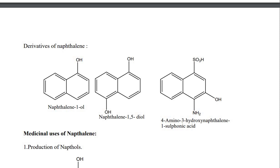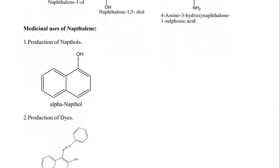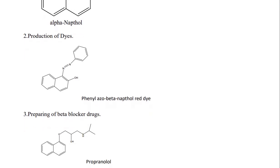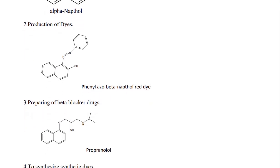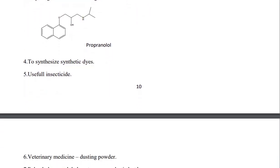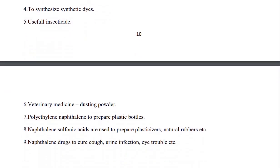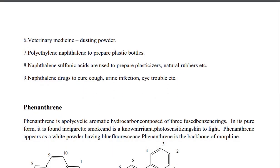Derivatives of naphthalene include naphthalene-1,5-diol and 4-imino-3-hydroxynaphthalene-1-sulfonic acid. Medicinal uses of naphthalene include: production of naphthols, alpha-naphthol products, azo dyes such as naphthol red dye, preparation of beta-blocker drugs such as propranolol, synthesis of dyes, insecticides, veterinary medicine dusting powders, polyethylene naphthalate for plastic bottles, naphthalene sulfonic acid for plasticizers, and naphthalene drugs to treat cough, urinary infections, and eye disorders.